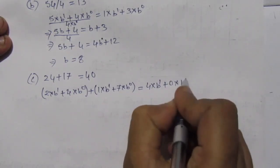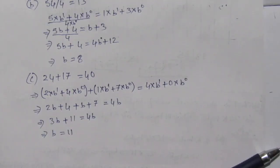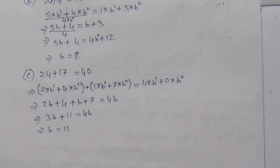This implies 2b + 4 + b + 7 = 4b. So 3b + 11 = 4b, which gives b = 11. Thank you for watching. If you have any question, please put it in the comment section below. Also like, share, and subscribe to my channel. Thank you.